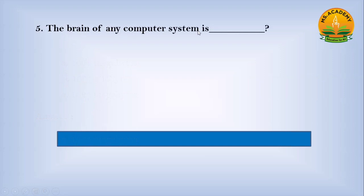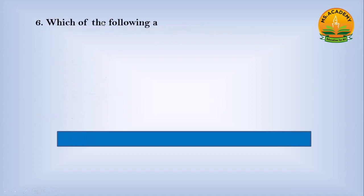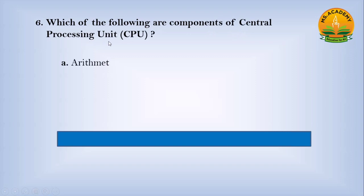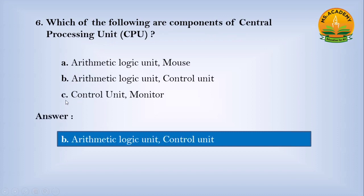The brain of any computer system is dash. Option A CPU, option B Memory, option C Control Unit. Answer: A. Number CPU. Which of the following are components of the Central Processing Unit? Option A Arithmetic Logic Unit and Mouse, option B Arithmetic Logic Unit and Control Unit, option C Control Unit and Monitor. Answer: B. Number Arithmetic Logic Unit and Control Unit.